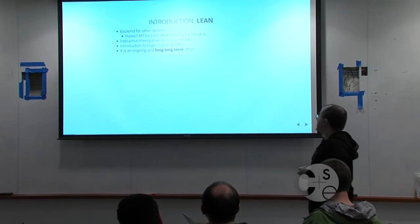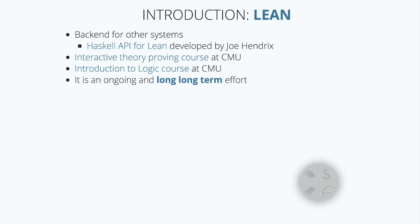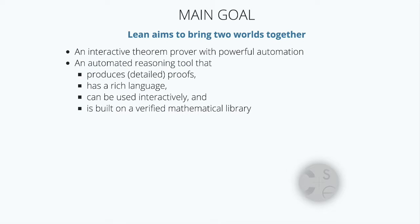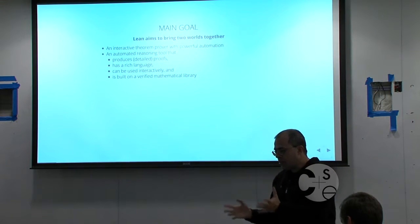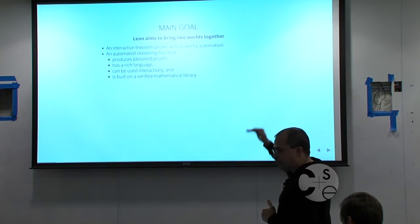We've had two courses already at CMU. Lean is far from being done — it's a work in progress, a long-term effort. Don't expect it to be done anytime soon. We are always improving it and looking for collaborators. The main goal is to bring together two worlds: the world of interactive theorem provers like Coq and Isabelle, and the world of automated reasoning tools like Z3, CVC4, and Vampire. These automated provers work on more restrictive logics like first-order or propositional logic, but are completely automatic. Our main goal is to bridge the gap between these two worlds.